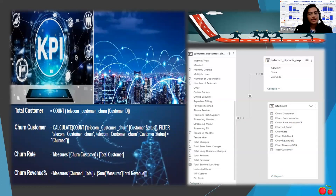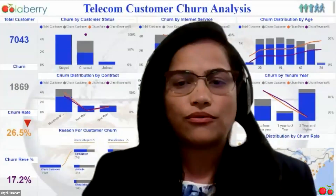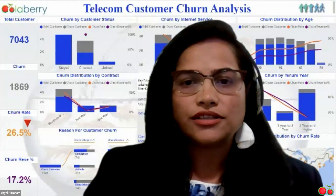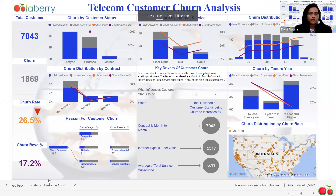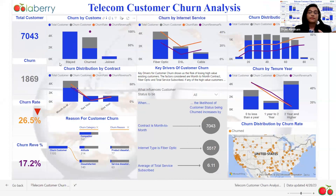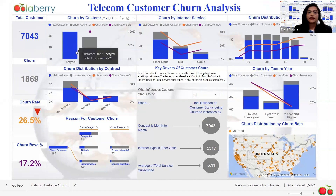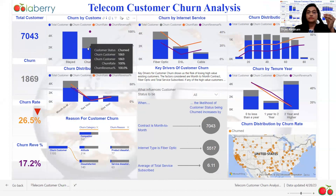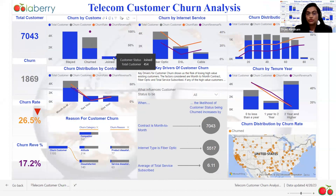Now that we've gone over the KPIs and data modeling, I can't wait to show you my dashboard. On the left-hand side are the KPIs, and I have utilized a multiple lines and stacked column chart layout. The first chart is the customer status, showing how many customers stayed, how many churned, and how many are new joins.